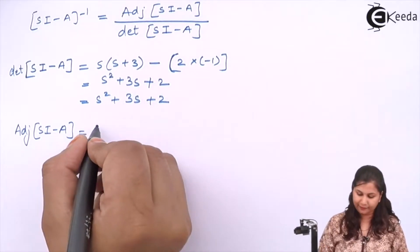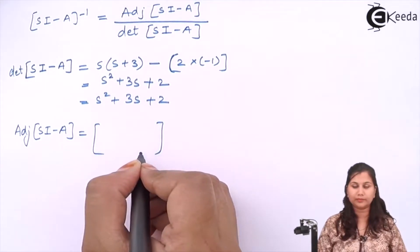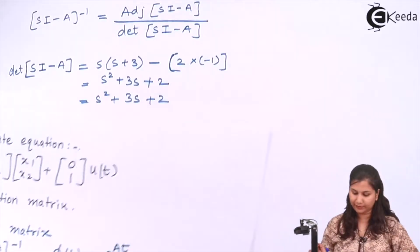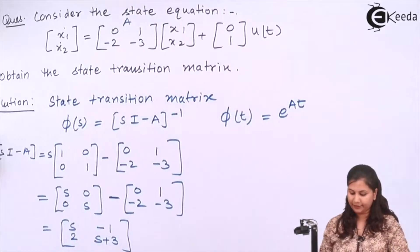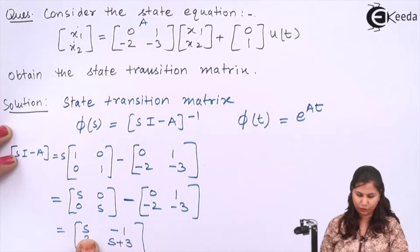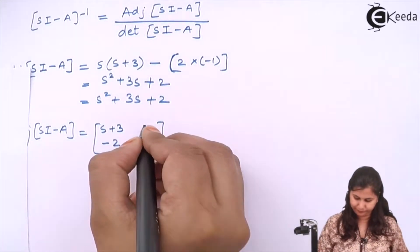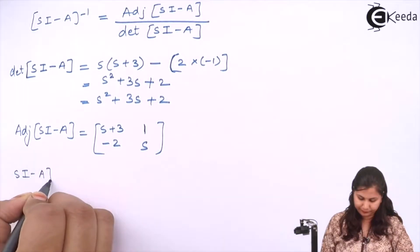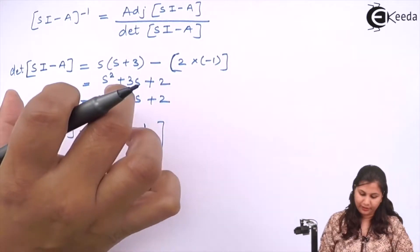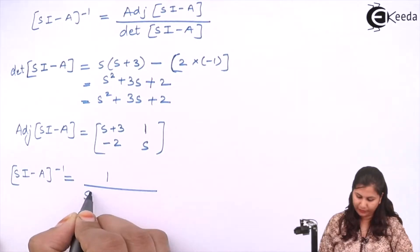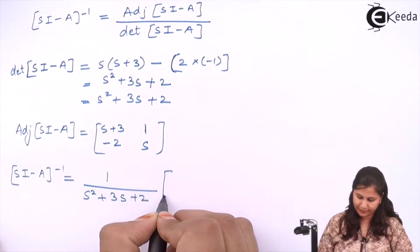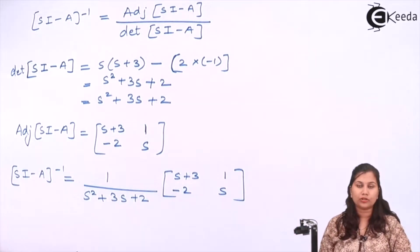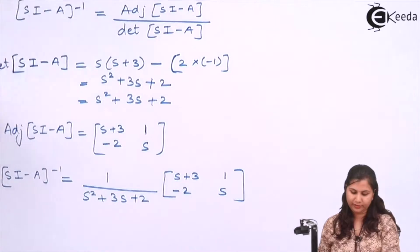The adjoint of sI minus A is obtained by exchanging the diagonal terms s and (s+3), and changing the sign of the off-diagonal terms, giving [s+3, 1; -2, s]. This is the adjoint. Now the inverse equals the adjoint divided by the determinant: (1/(s²+3s+2)) times [s+3, 1; -2, s]. This is sI minus A inverse.